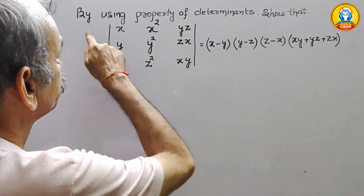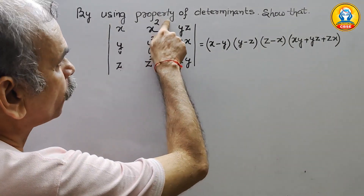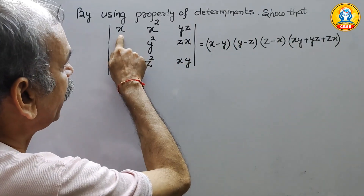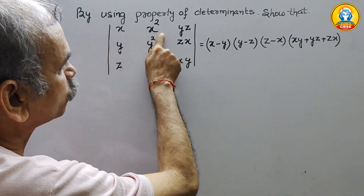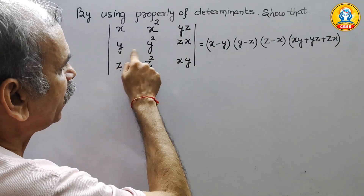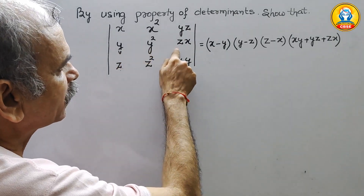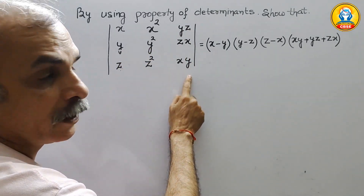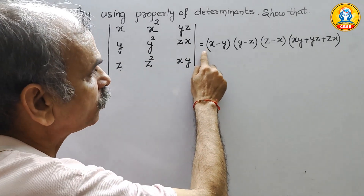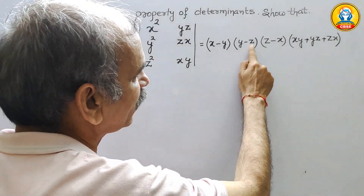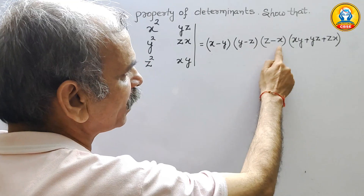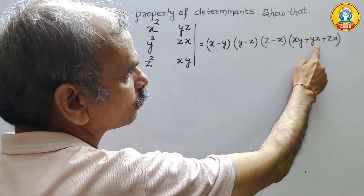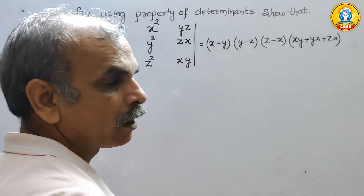Your question is: by using properties of determinants, show that the determinant with rows (x, x², yz), (y, y², zx), (z, z², xy) is equal to (x minus y)(y minus z)(z minus x) into (xy plus yz plus zx).